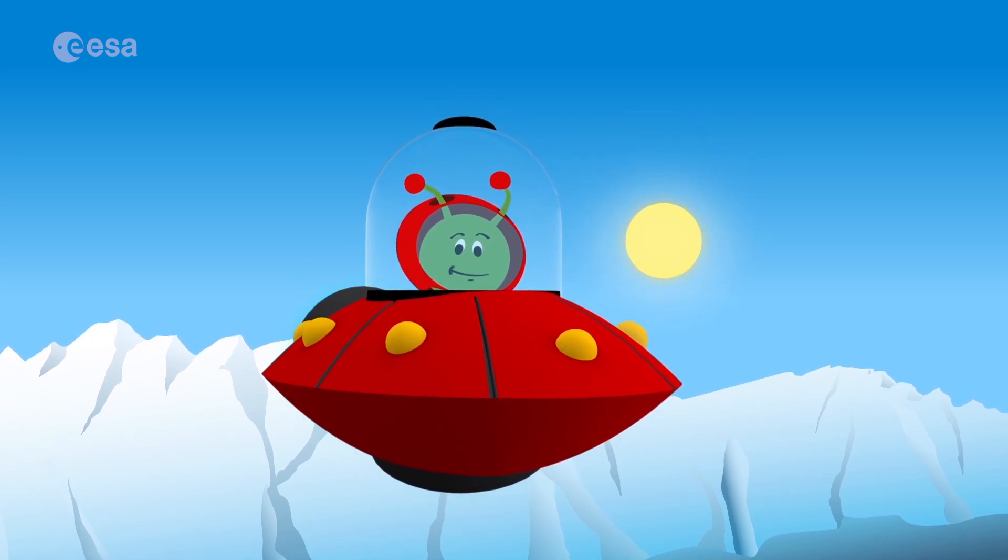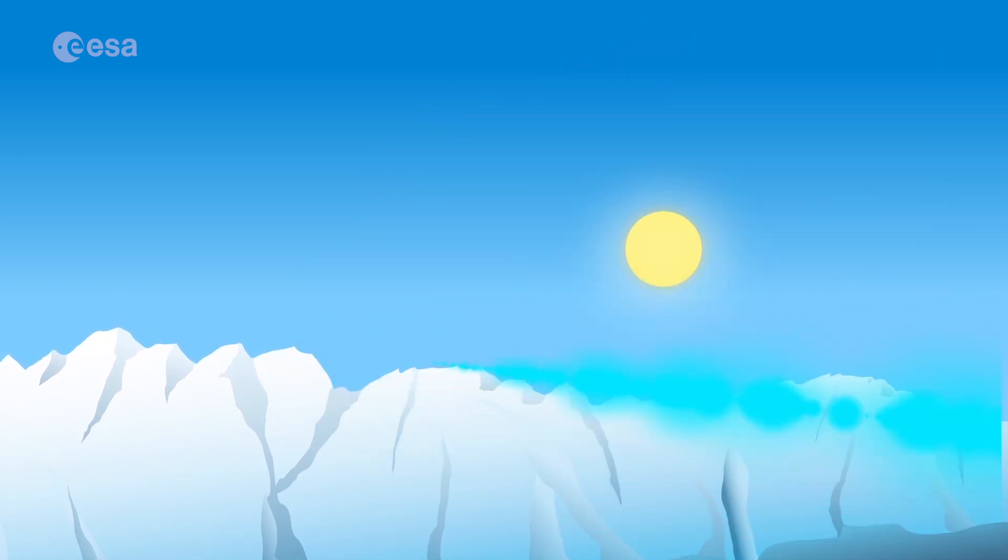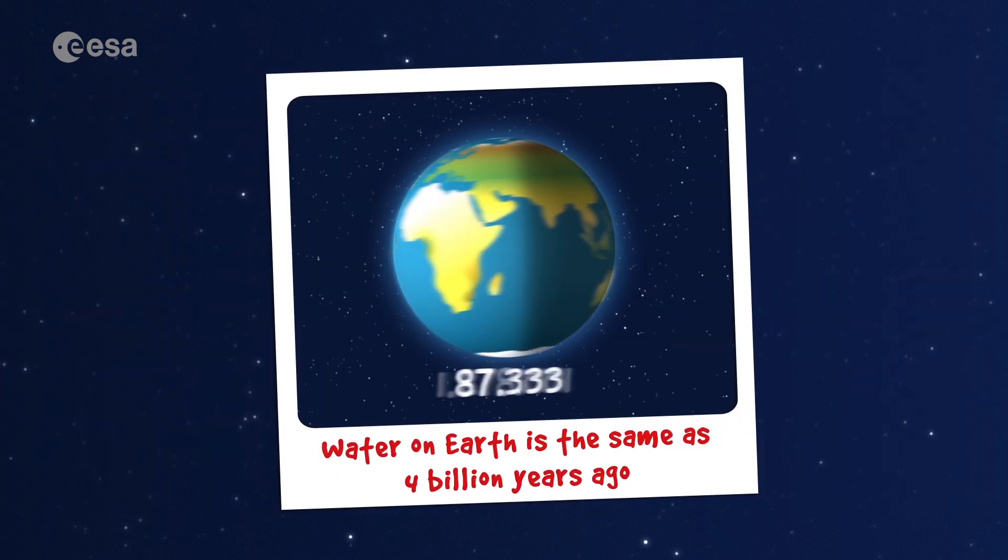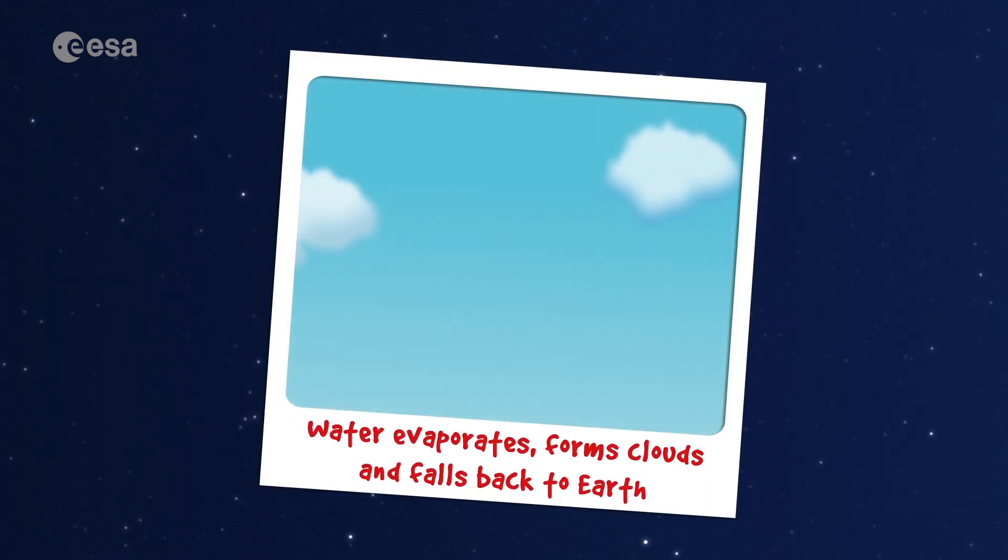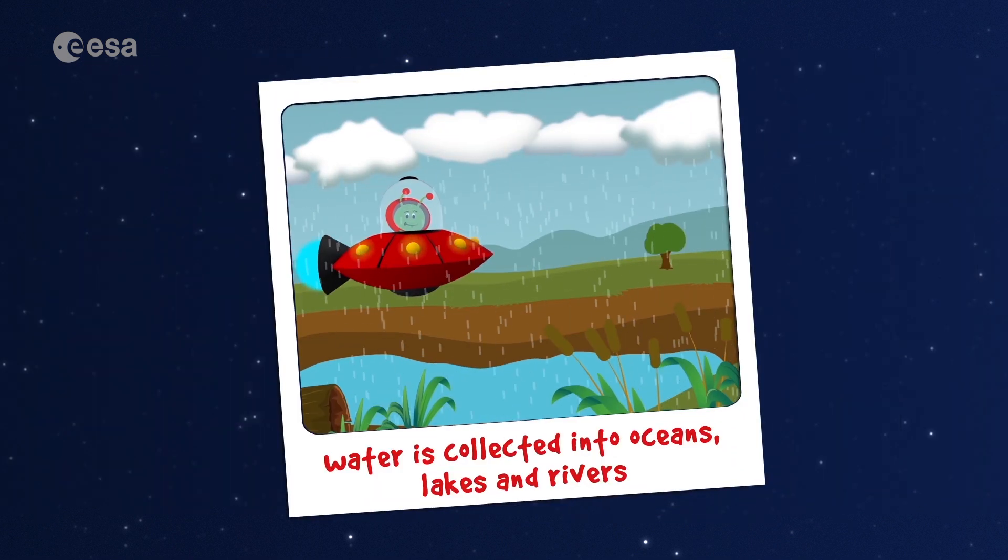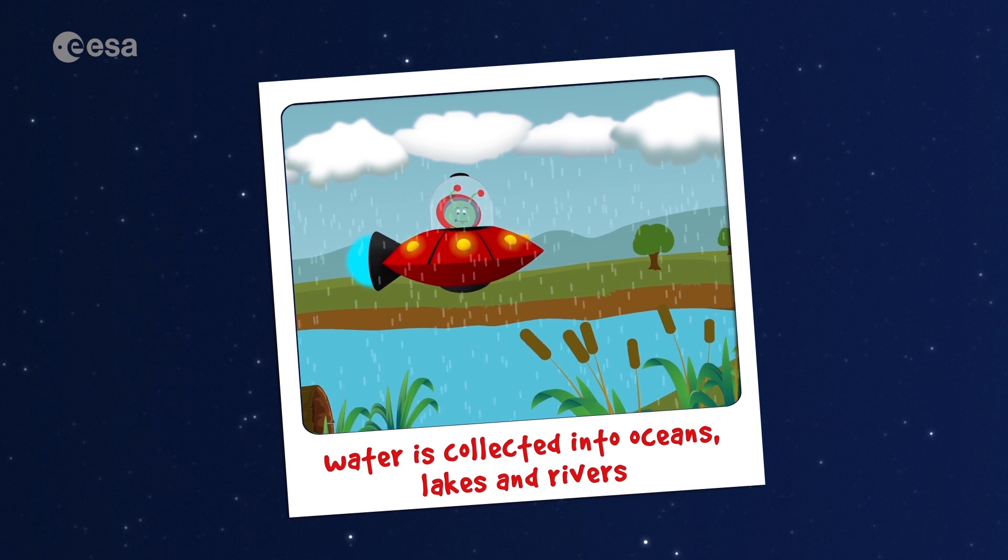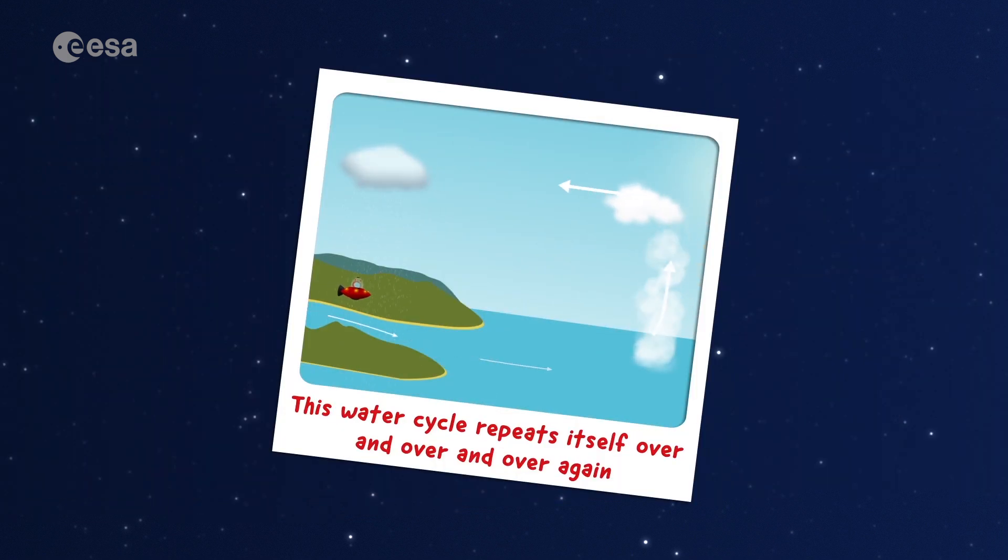So, today we learned that every living thing needs water to survive. Water on Earth has been the same for 4 billion years. Water evaporates, forms clouds and then falls back to Earth. It's collected into oceans, lakes and rivers, and it keeps on recycling itself over and over and over again.